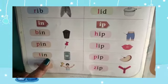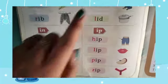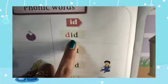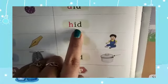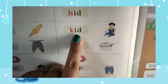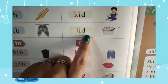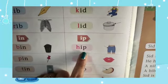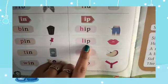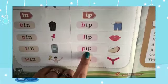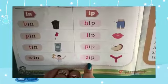T-I-N Tin. V-I-N Vin. D-I-D Did. H-I-D Hid. K-I-D Kid. L-I-D Lid. H-I-P Hip. L-I-P Lip. P-I-P Pip. Z-I-P Zip.